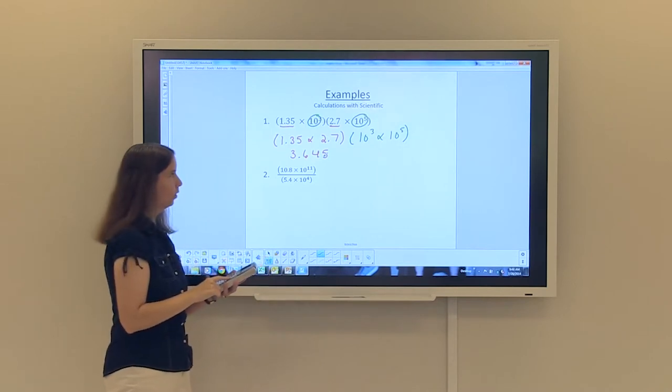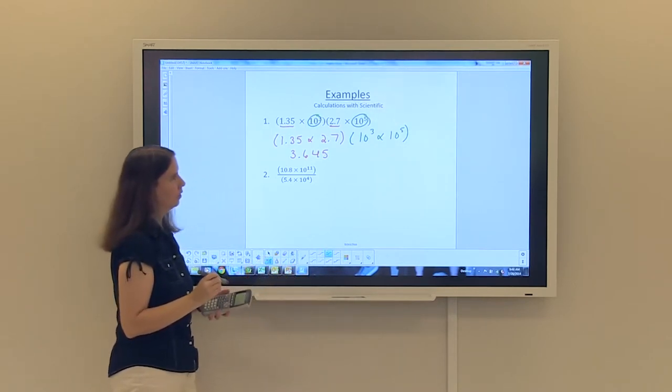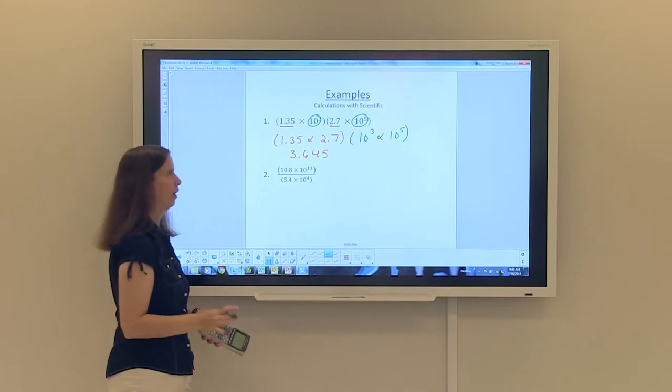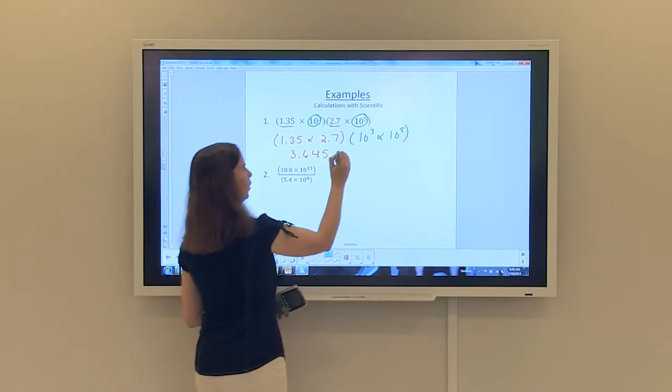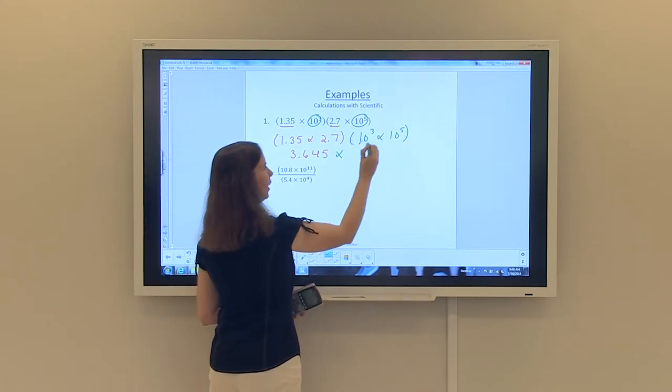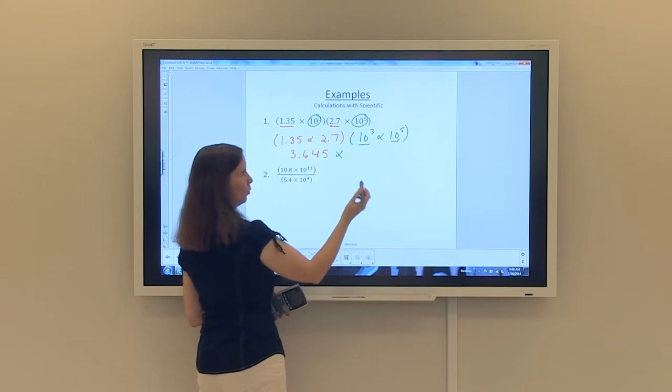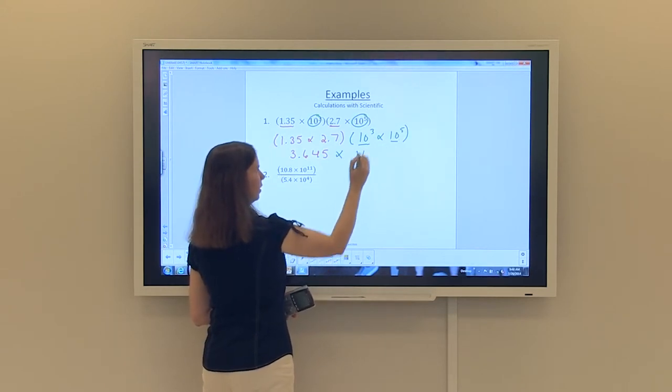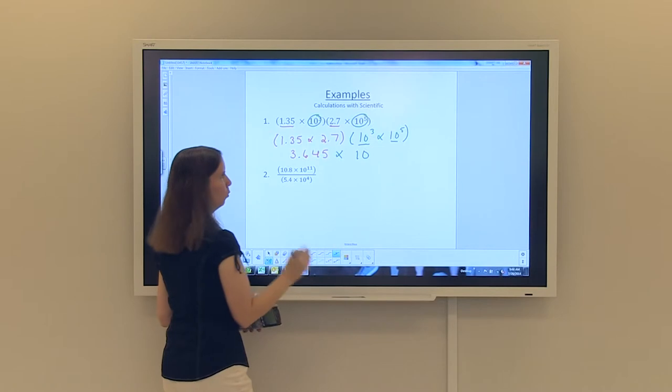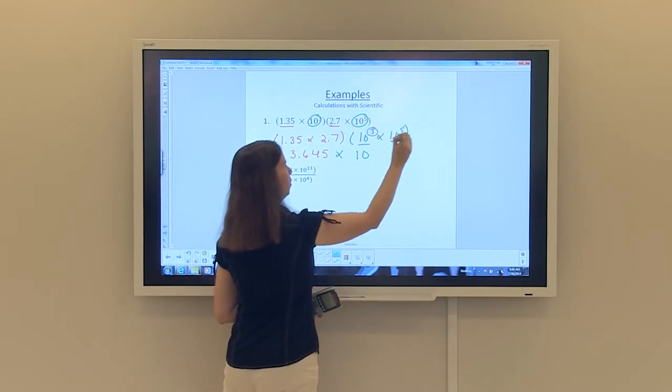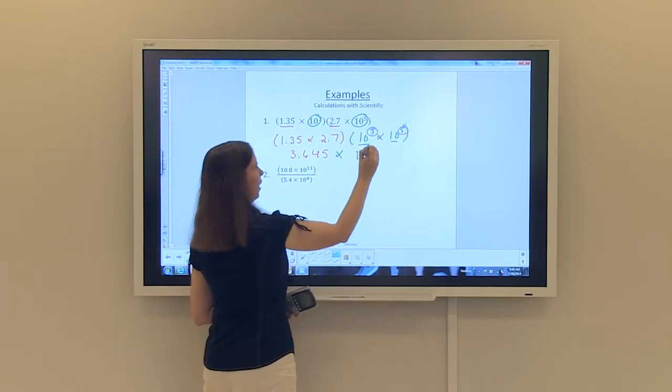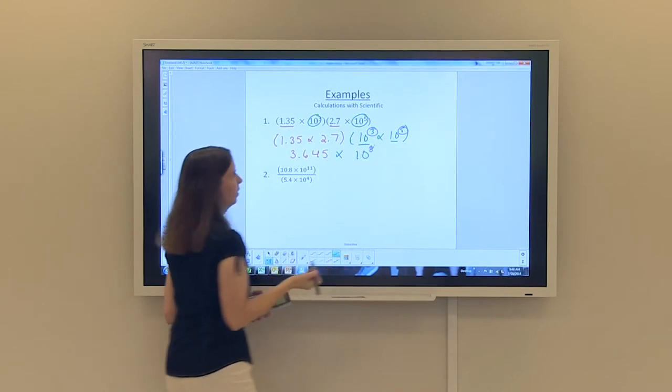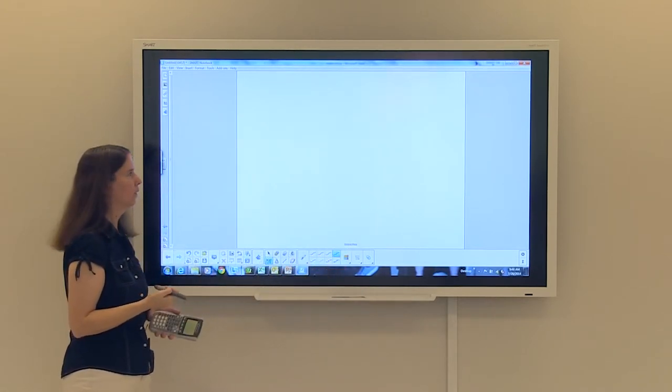And then we'll do the green part, the 10 to the third times 10 to the fifth, which I don't need my calculator for. First off, because they are like bases, I know that when I multiply I keep the base. And then the second thing that we know when we multiply like bases, we add the powers together. So 3 plus 5 would give us 8. So that's our answer written in scientific notation.